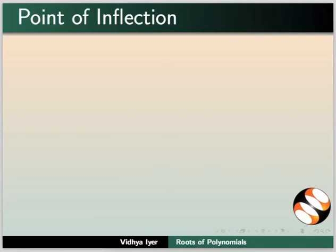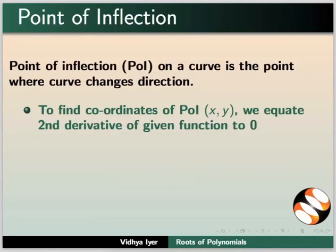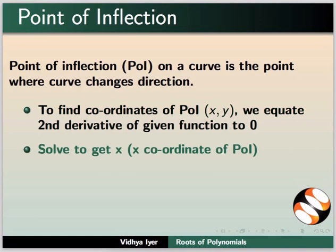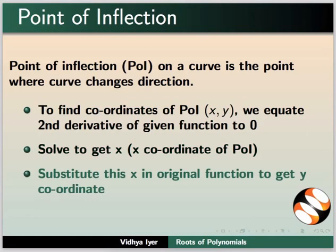A point of inflection, POI, on a curve is the point where the curve changes its direction. To find the coordinates of POI (x,y), we equate second derivative of the given function to zero. Solution of this equation gives us x, the x coordinate of POI. Substitute this x in original function to get y coordinate.